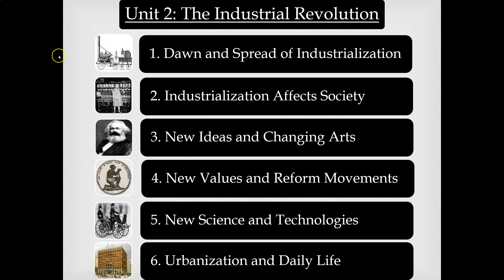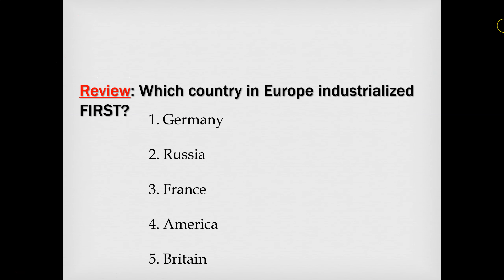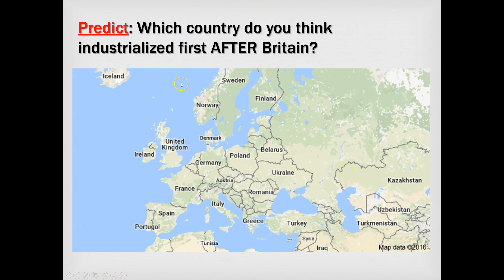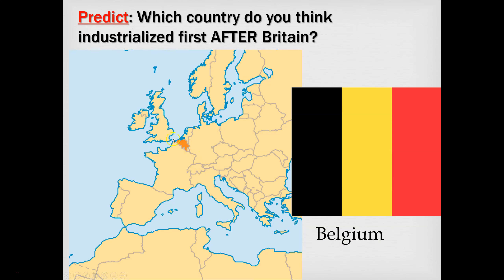Now in this video we're going to begin to spread industrialization around the world. To quickly review: which country in Europe industrialized first? We know it is Britain. So let's spread it from Britain across Europe. Where would it go next? You can't keep something like the Industrial Revolution locked up in a country forever. The answer is not France, not Germany or Norway — it's Belgium.